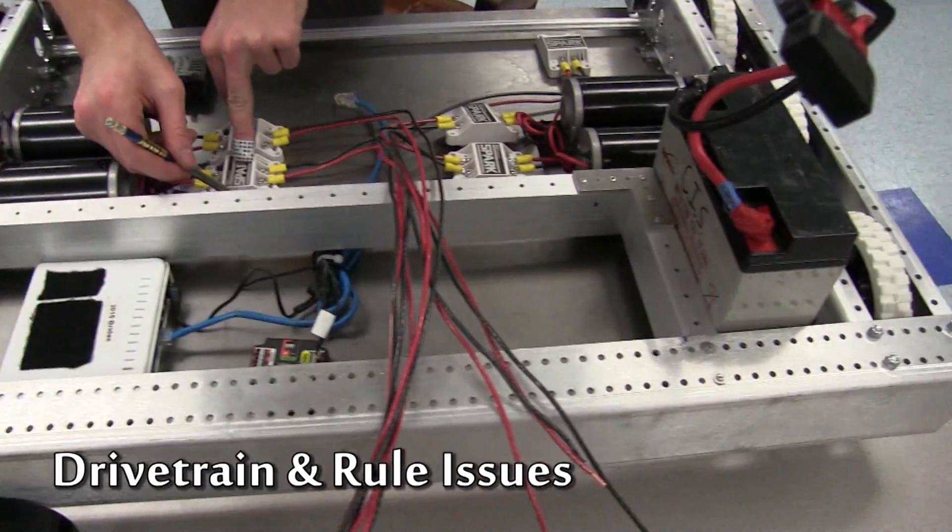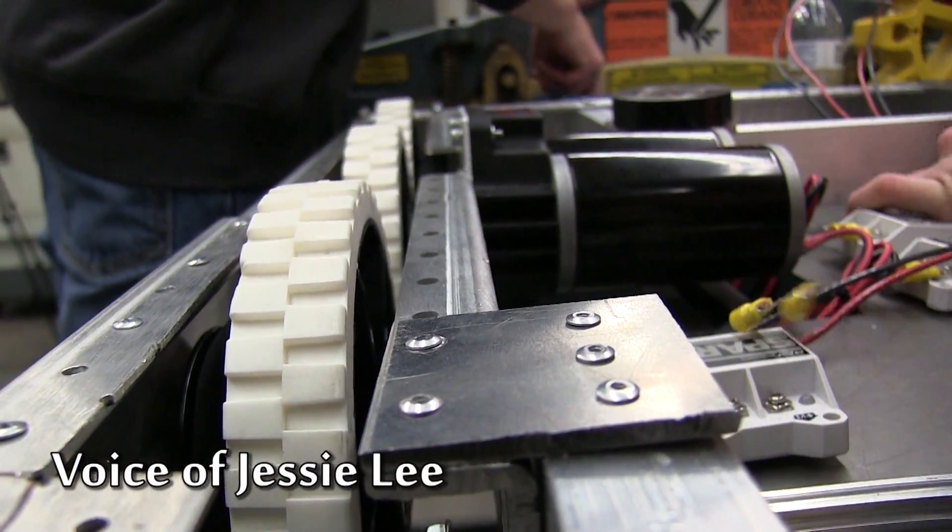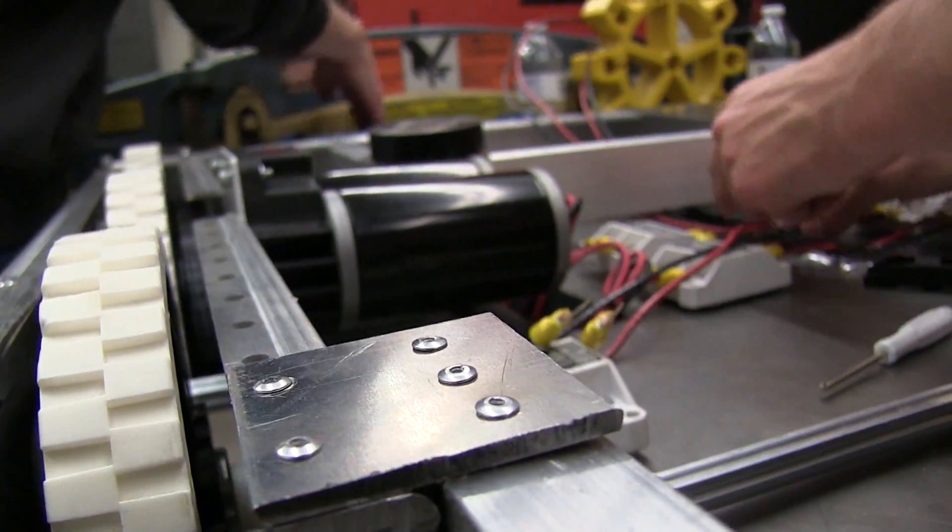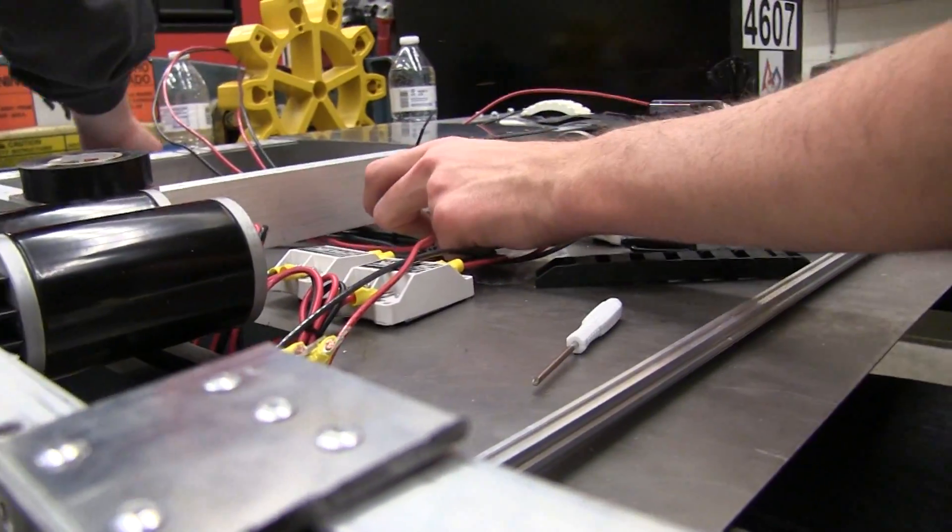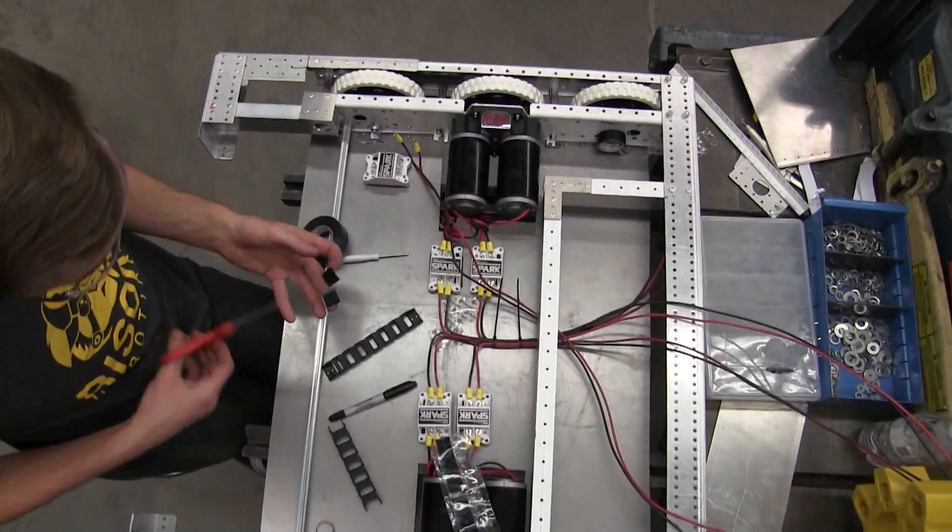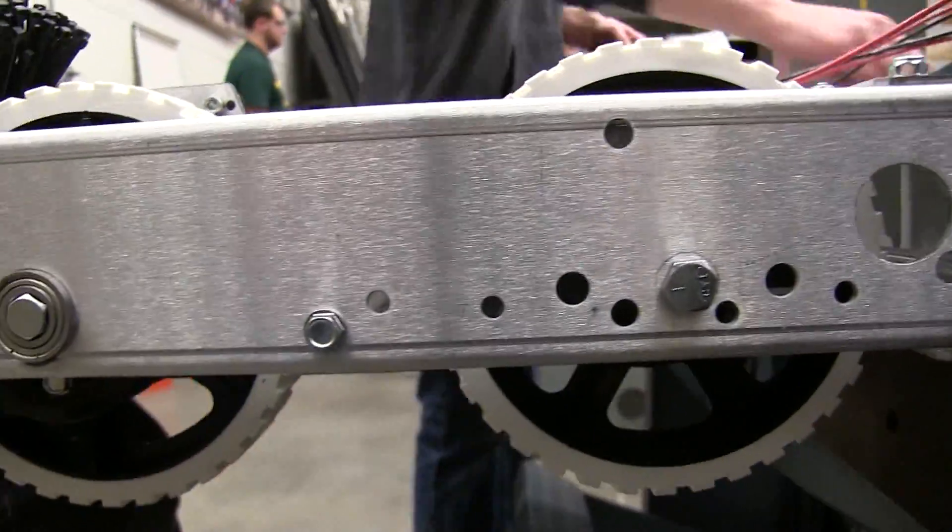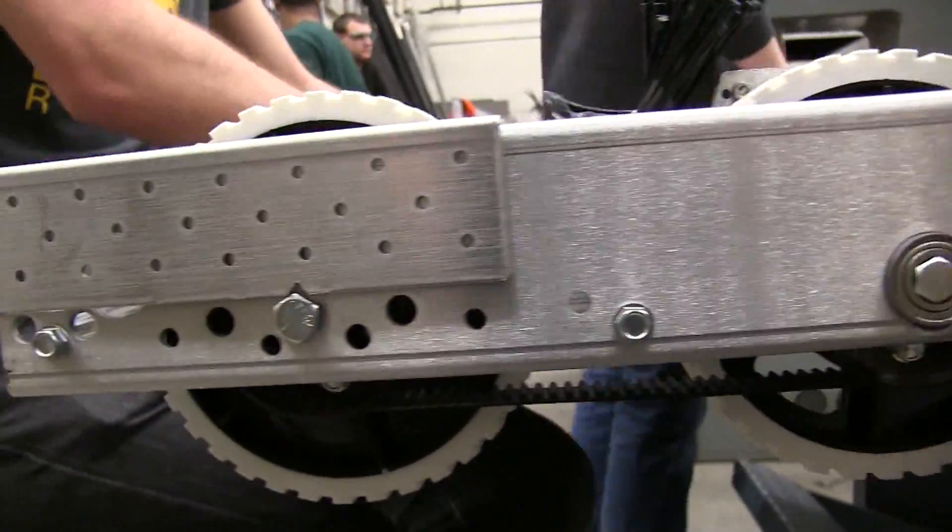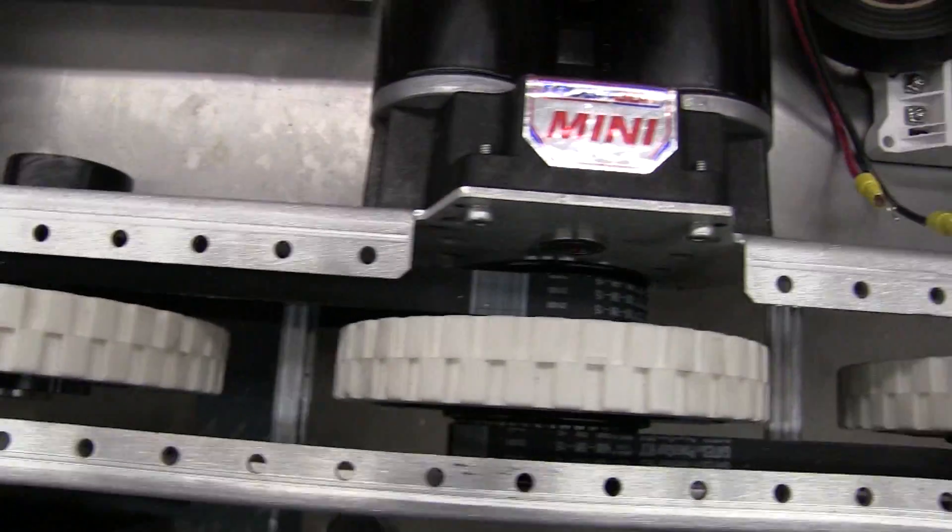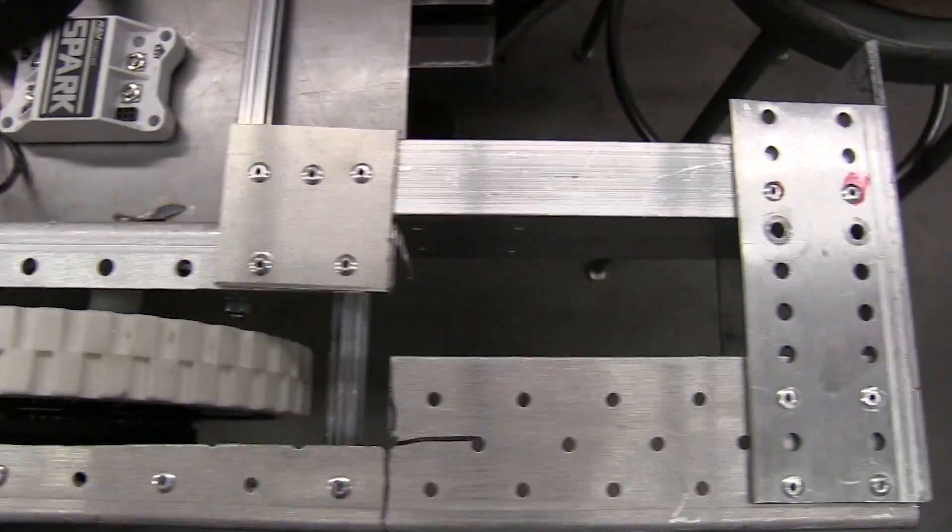We had some minor issues when we cut the kit chassis down in the first place. We had some miscommunication and we also missed a huge rule this year, and that's that your maximum robot volume includes your bumpers. Another key rule we want to point out is that your robot starting configuration must be within your frame perimeter, not the max volume.